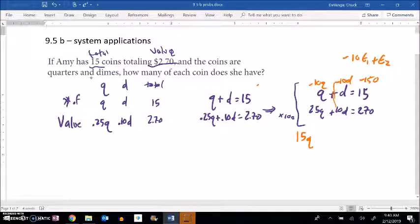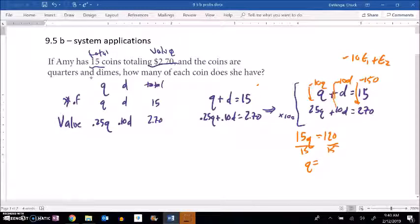So now when I add these together negative 10Q plus 25 of them, that's 15Q. D's drop out just like I wanted to happen. And negative 150 plus 270, that's the same as 270 minus 150, I think that's 120. Great, so now I can divide by 15, 120 divided by 15 is 8. So my number of quarters is 8.